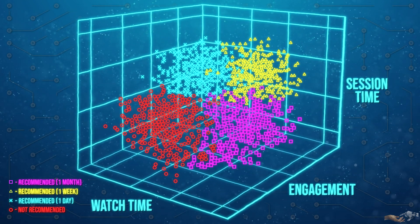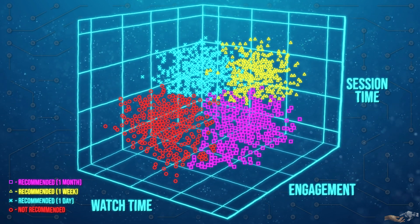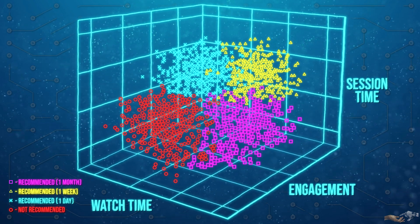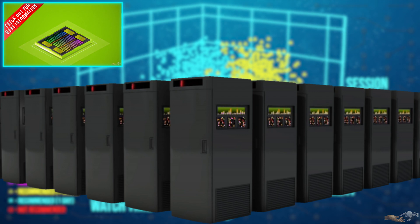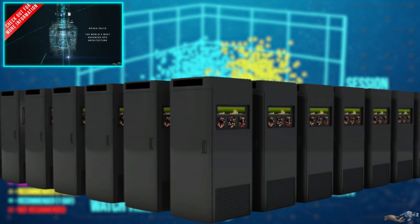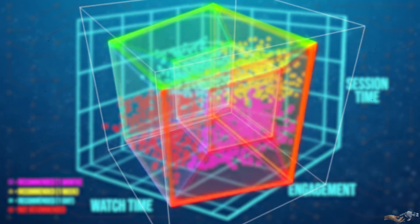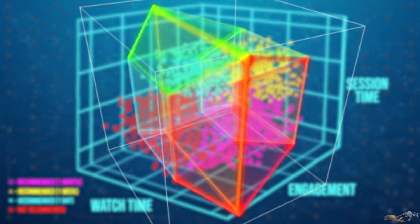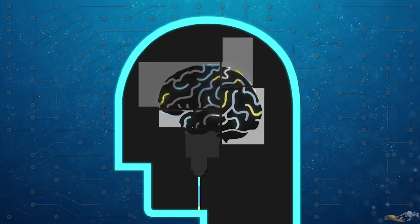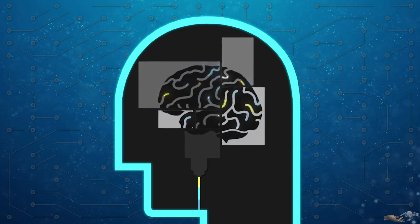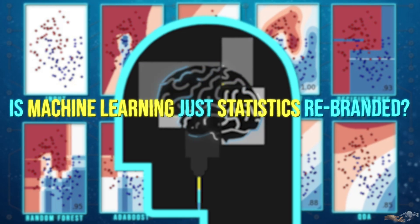The only way to really model more complex real-world systems using these algorithms is through the use of powerful data center computers or GPUs, which excel at repetitive calculations. Imagine trying to visualize and do the mathematics by hand of a hyperplane going through a thousand-dimensional system. After walking through these simple examples and viewing various machine learning models, is machine learning just statistics rebranded?